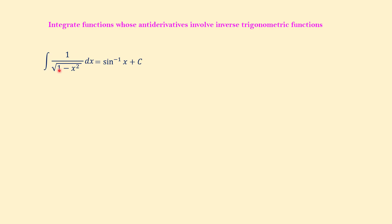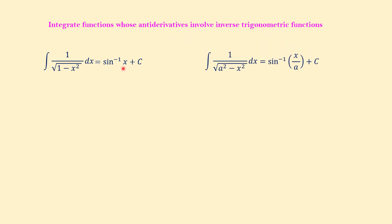The next formula: the integral of 1 over √(1 − x²) dx is arcsin(x) plus c. If you remember from derivative formulas, the derivative of arcsin(x) is 1 over √(1 − x²), so the integral of this expression is arcsin(x). The generalized form is: the integral of 1 over √(a² − x²) dx is arcsin(x/a) plus c, where a can be any positive number such as 2, 3, √3, etc.